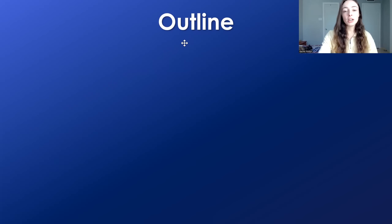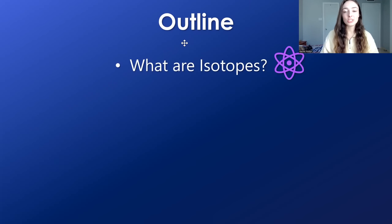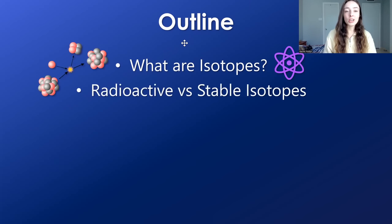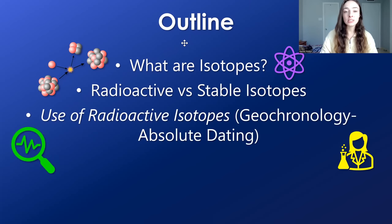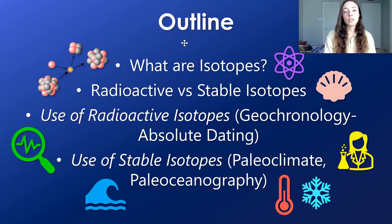In terms of what we'll cover: we'll talk about what isotopes are, just to make sure we're all on the same page. We'll discuss radioactive versus stable isotopes, the differences between them, then the use of radioactive isotopes for geochronology or dating rocks, and the use of stable isotopes for paleoclimate or paleoceanography — reconstructing ancient climatic and oceanographic conditions.